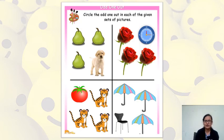Now next worksheet. In this worksheet, in the first picture, we have three pears and one dog. We have three pears which are similar. But dog is an animal and pear is fruit. So we are going to circle the odd one, which is dog.